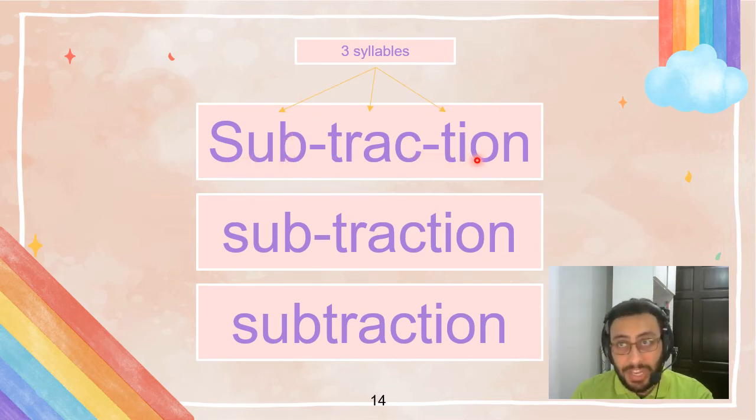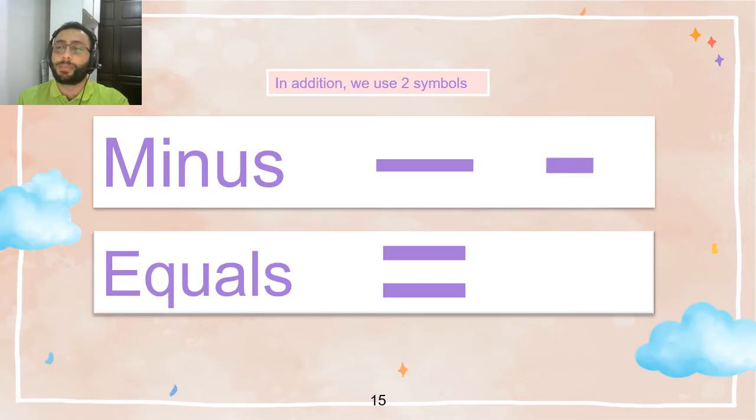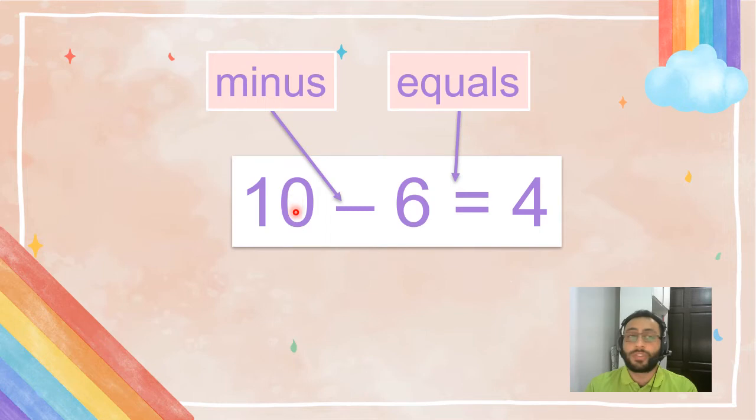Very good. Subtraction is made of three syllables: sub-trac-tion. Not 'shan,' but 'shun.' Subtraction. Now put it together: subtraction, subtraction. It's a long word but easy to say. Subtraction.